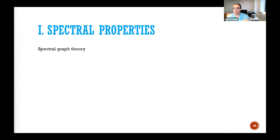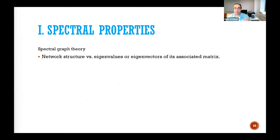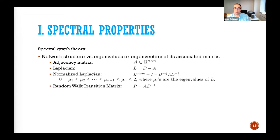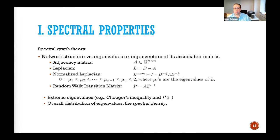You can use tools from spectral graph theory, which connects the structure of a graph with the eigenvalues and eigenvectors of some associated matrix — the adjacency matrix, the Laplacian, the normalized Laplacian whose eigenvalues are bounded, or the random walk transition matrix. Once you have these eigenvalues, you can use them to represent the graph — for example, using the extreme eigenvalues as Cheeger's inequality discusses, or the overall distribution of eigenvalues through the spectral density.